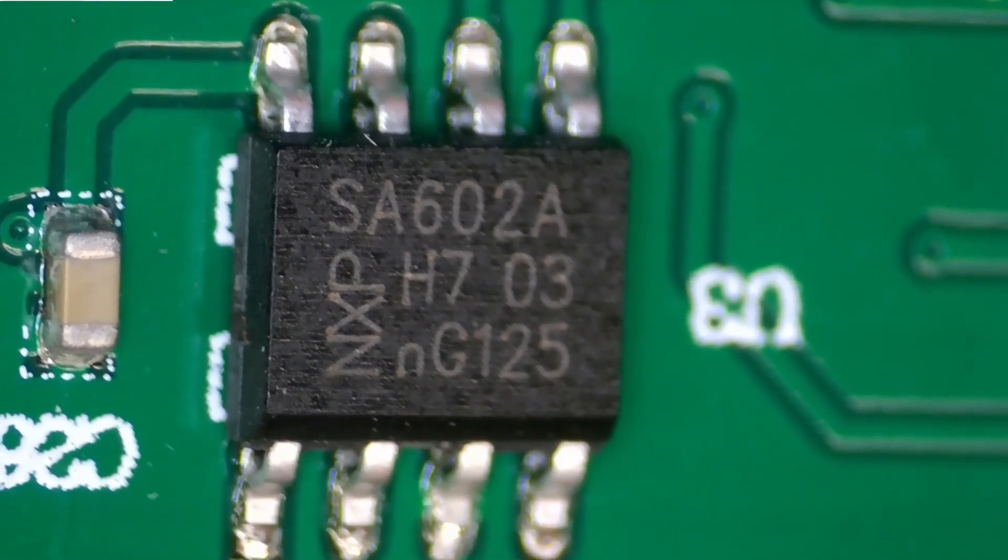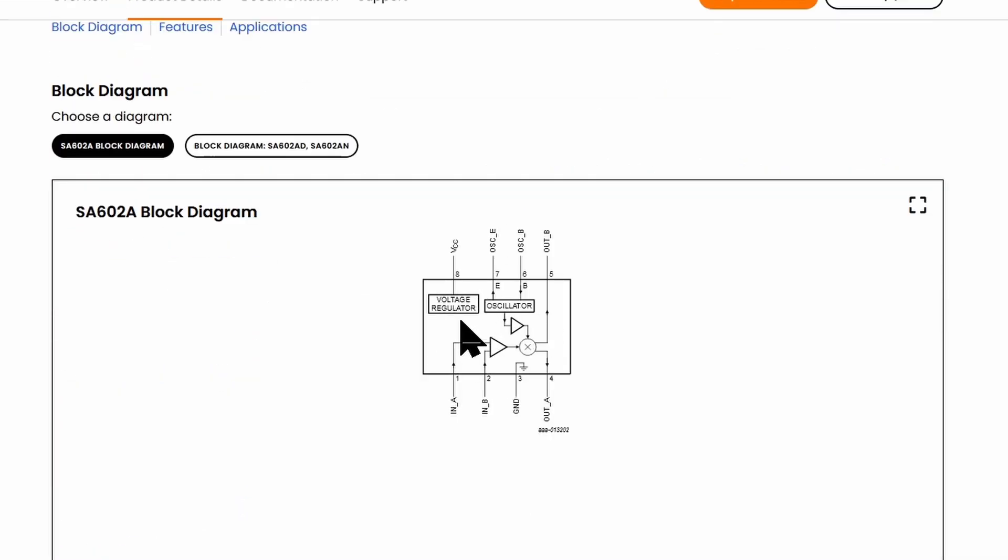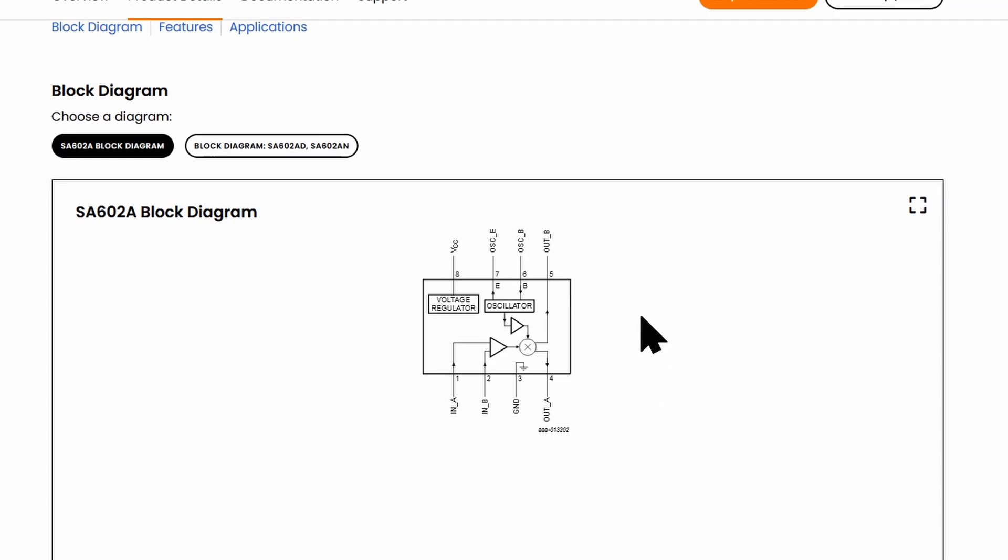That NXP branded SA602A device, that's a double balanced mixer and oscillator. It says that it's a low power VHF monolithic double balanced mixer with input amplifier, onboard oscillator, and voltage regulator. It is intended for high performance, low power communication systems, which makes sense because this is a receiver for the camera, not for the video, but just for whatever sort of signal it's producing in order to be able to locate the thing. And so more text, more description about it. This looks like this is what it's got inside. So a voltage regulator, it's got the oscillator, and it looks like maybe a little amplifier, the mixer stuff. So yeah, no clue what this is actually doing in here, but based on what it says it's meant to do, I guess it makes sense.